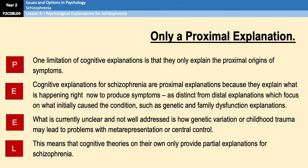As a limitation of cognitive explanations, they are only proximal explanations. Proximal explanations can explain what is happening right now but they can't explain what initially caused the condition, unlike genetics or family dysfunction explanations. What's currently unclear is how genetic variation or childhood trauma may lead to problems with things like meta-representation or central control. This means that cognitive theories on their own only provide partial explanations for schizophrenia and can't tell us very much about where the condition comes from in the first place.